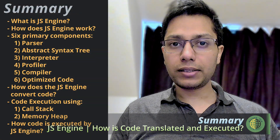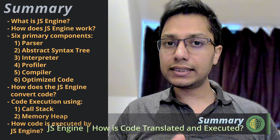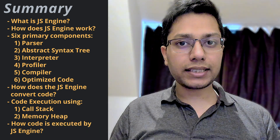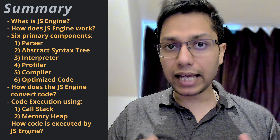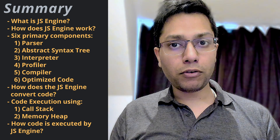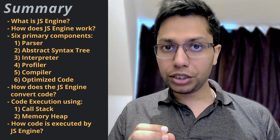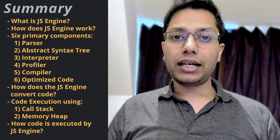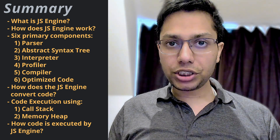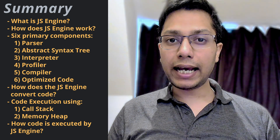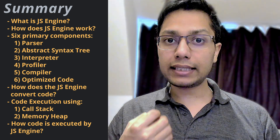To put it all together, the JavaScript engine executes our code in several steps. It reads the source code and breaks it down into tokens, which are then used to create an abstract syntax tree. The engine generates bytecode from the AST and executes it, managing memory allocation and deallocation as necessary. During execution, the engine may try to optimize the code by analyzing its performance and generating optimized machine code using profiling data. Overall, the engine converts our JavaScript code into machine code and executes it in a managed environment, responsible for managing the call stack, memory heap, and executing the code as efficiently as possible.